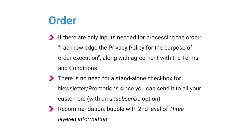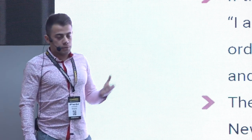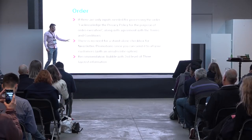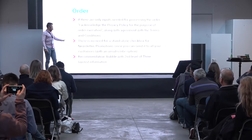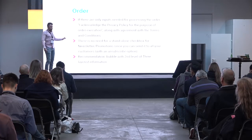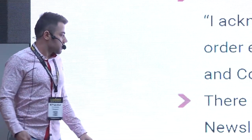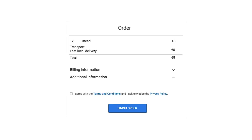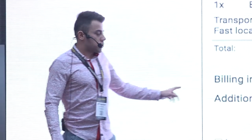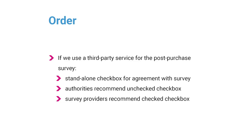The order application is a bit more complicated because there are many forms and versions. If the order form has only inputs needed for order processing, you don't have to ask for consent to the privacy policy — you just need to inform the user. There is also a need for a standalone checkbox for newsletter or promotions, since you can only send it to customers who agreed. Never forget the unsubscribe option. Most European e-commerce sites use a checkbox for terms and conditions — we recommend adding: 'I acknowledge the privacy policy.'